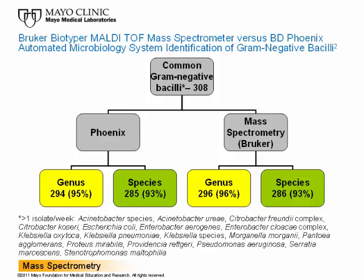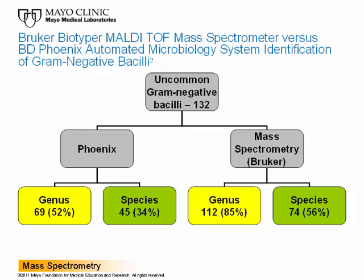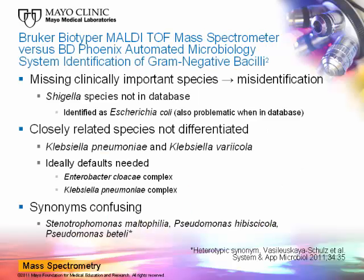The 440 isolates included 308 common gram-negative bacilli — organisms seen more than once a week in our laboratory, including Escherichia coli and Pseudomonas aeruginosa. Both systems identified 93% of common isolates to the species level, and the BD-Phoenix and mass spectrometry systems identified 95% and 96% respectively to the genus level, with no statistical difference between the systems for common organisms. The 440 isolates also included 132 uncommon gram-negative bacilli, where mass spectrometry identified 85% to genus and 56% to species, versus 52% and 34% for BD-Phoenix.